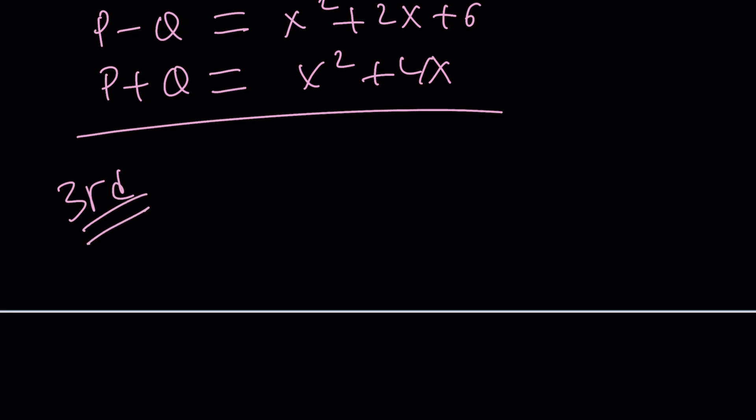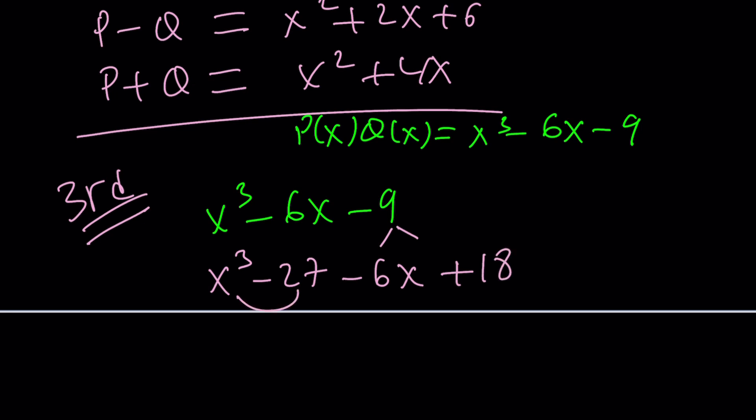The third method is actually really cool because think about it. P(x) times Q(x) was given as x³ - 6x - 9, right? So can I factor the cubic? And the answer is yes. There's a couple of ways to go about it. I'm not going to go into the details. You can use the rational root theorem and you're going to realize at some point that x equals 3 is a solution.